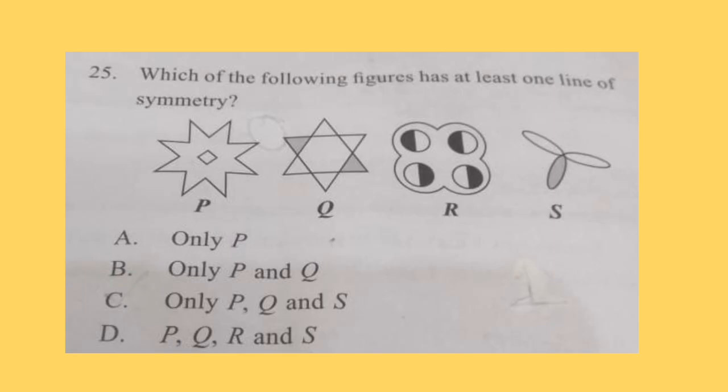Question 25: Which of the following figures has at least one line of symmetry? Look at the given figures carefully and try to find at least one line of symmetry. And the figure which does not have line of symmetry is the answer. Correct answer is only P, Q, and S.